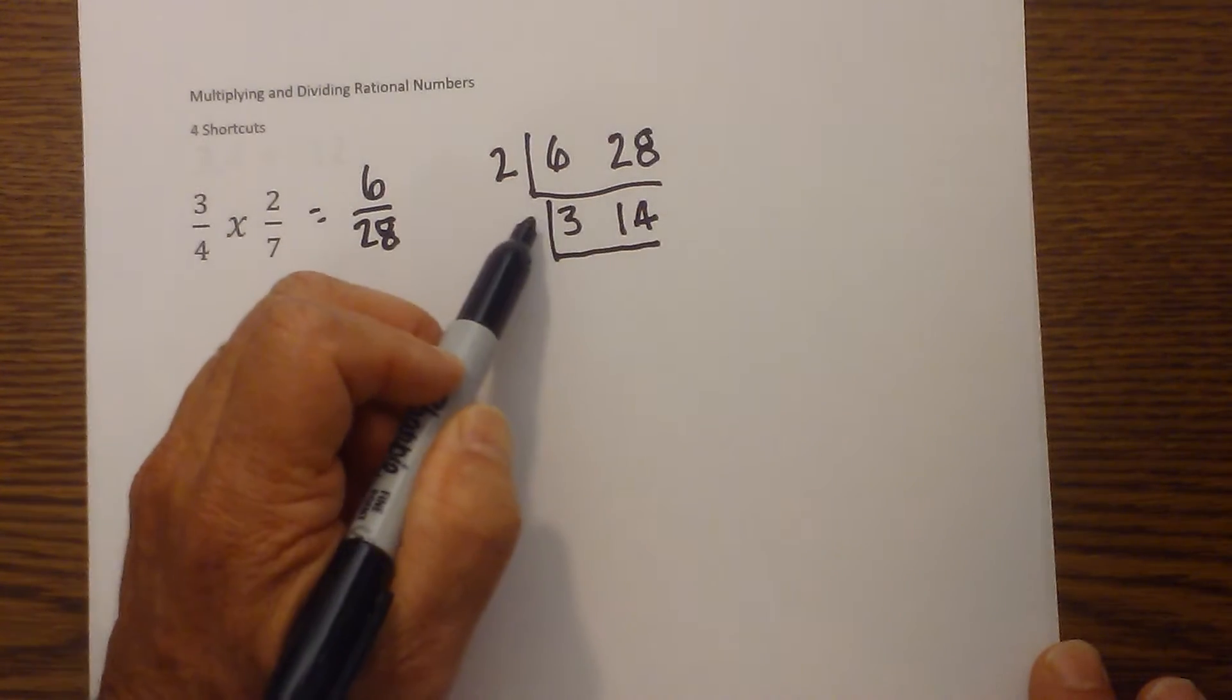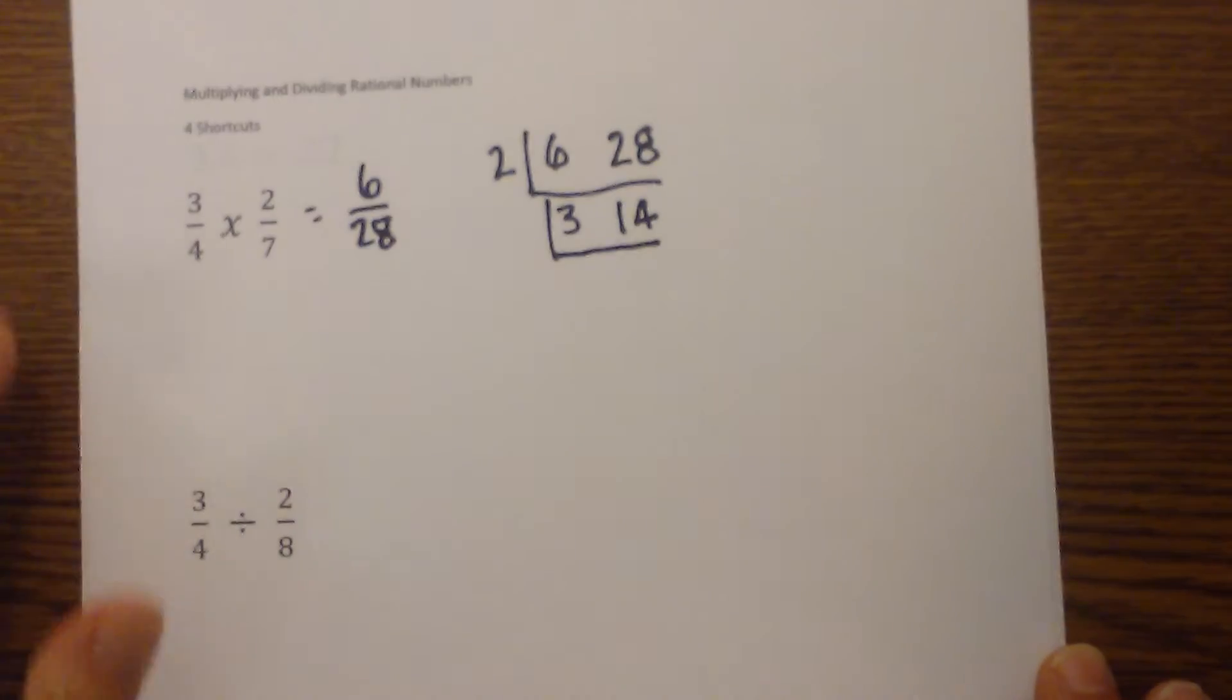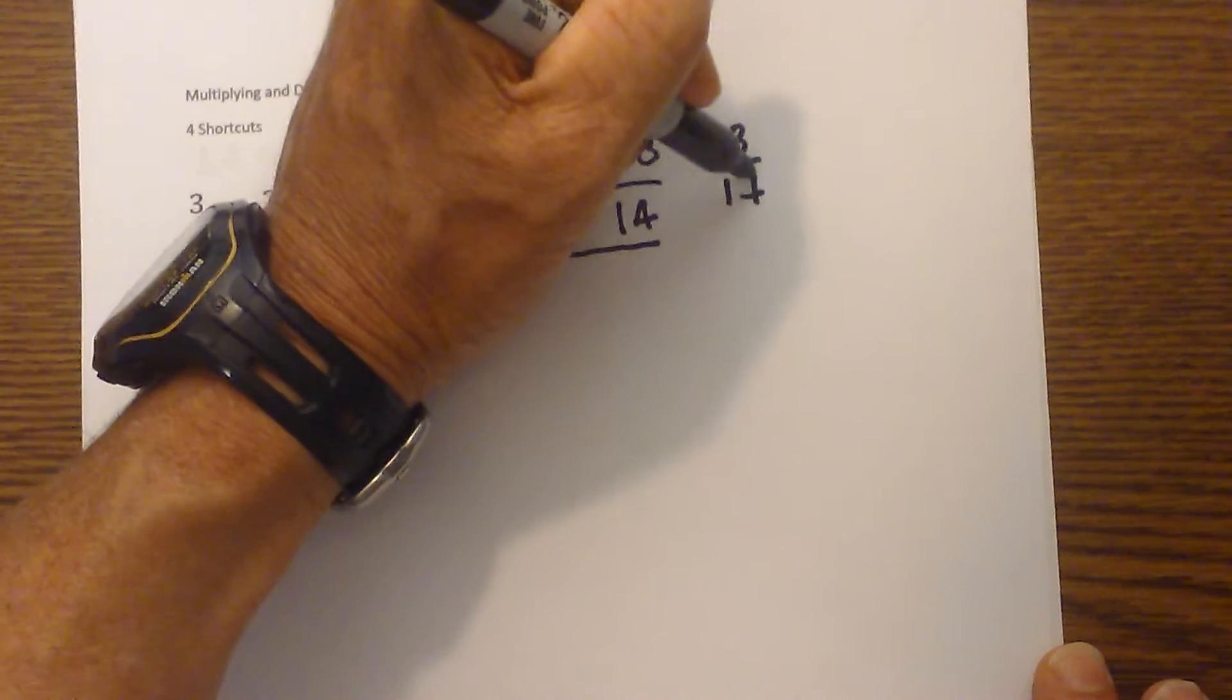3 goes into 3 once, but 3 doesn't go into 14. So I'm down to a prime number, I cannot divide any more. So that becomes your fraction. So the answer is 3 fourteenths.